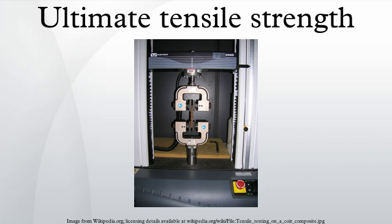Concept: ductile materials. Many materials display linear elastic behavior, defined by a linear stress-strain relationship, as shown in the left figure up to point three. The elastic behavior of materials often extends into a non-linear region, represented in the figure by point two, up to which deformations are completely recoverable upon removal of the load. That is, a specimen loaded elastically in tension will elongate, but will return to its original shape and size when unloaded. Beyond this elastic region, for ductile materials such as steel, deformations are plastic. A plastically deformed specimen will not completely return to its original size and shape when unloaded.